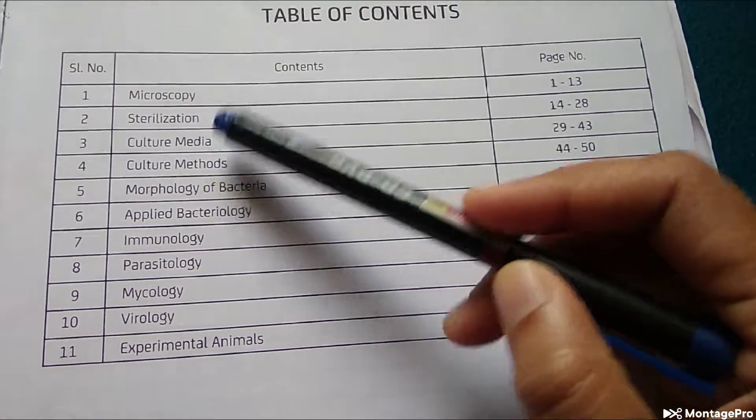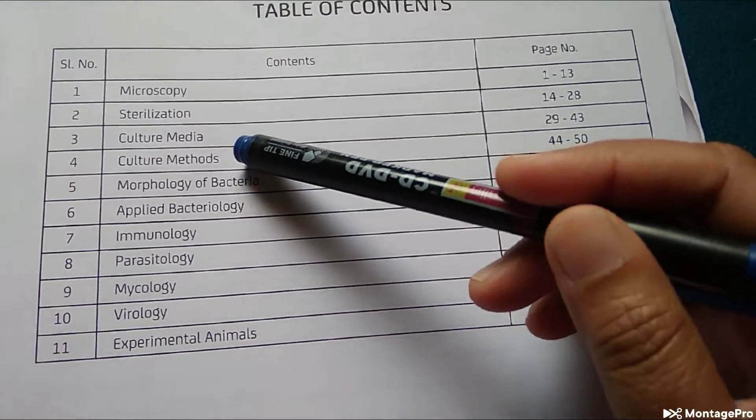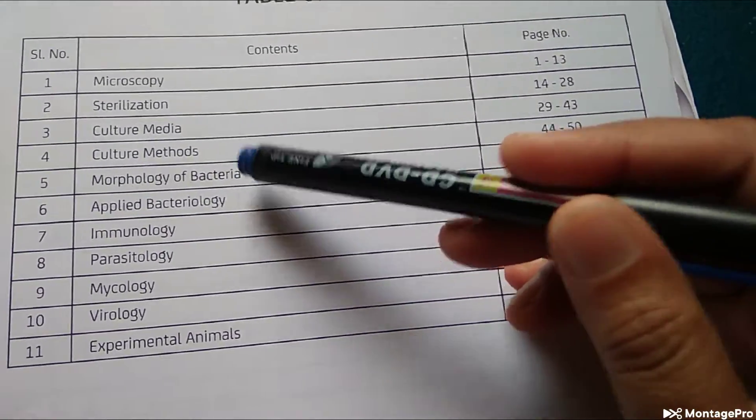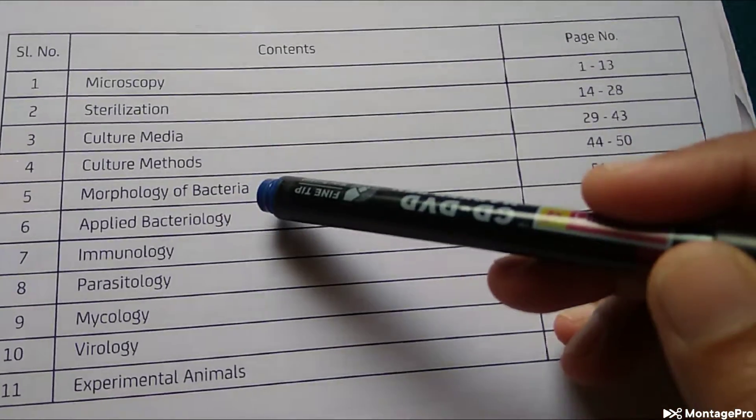Then culture media - so many types of culture media, all the colors you will know. Culture methods like aerobic and anaerobic, morphology of bacteria. You will learn to know whether it's a cocci or a bacilli. Applied bacteriology.